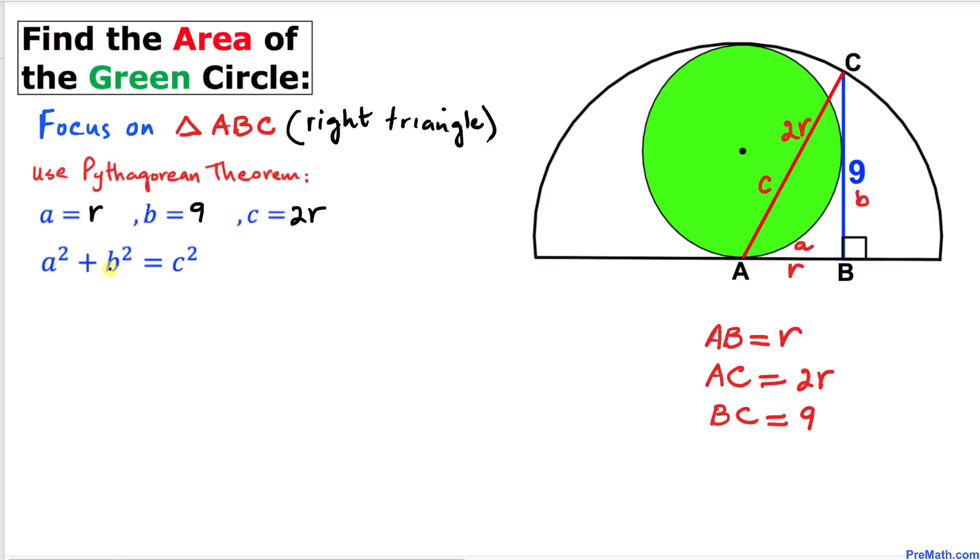Here's our Pythagorean theorem. Let's fill in the blanks. a in our case is r, b is 9, and c is 2r. So this is going to become r² + 9² = (2r)².